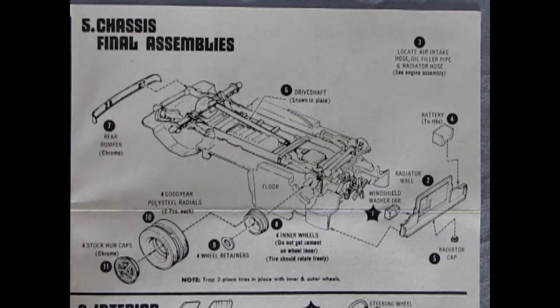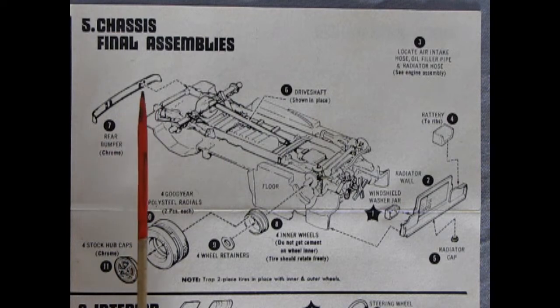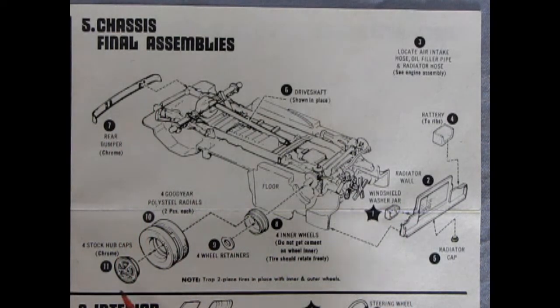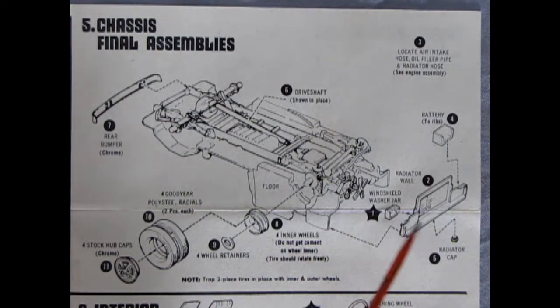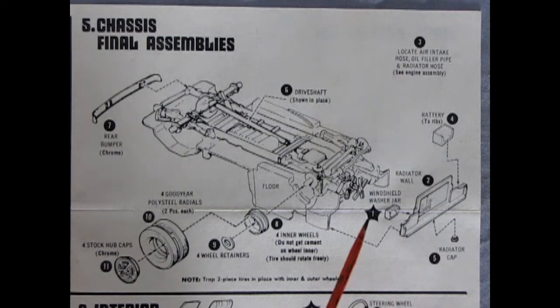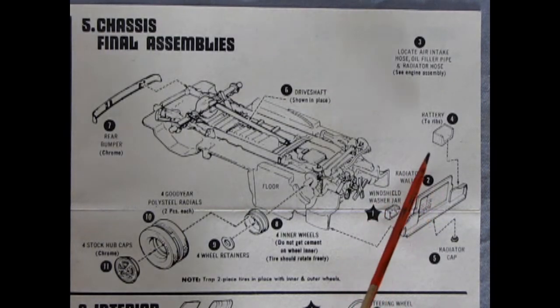Panel 5 shows our chassis final assembly, and here we assemble on the rear bumper, our wheels and tires, and as you can see this one has a retainer clip that pops in, so be careful there on how you glue it together. There's our radiator, the cap goes on up underneath because this is upside down. Windshield washer jar and a battery.